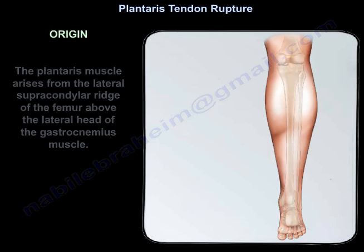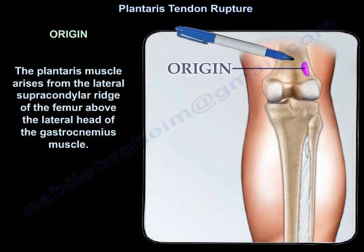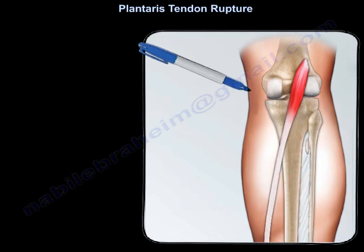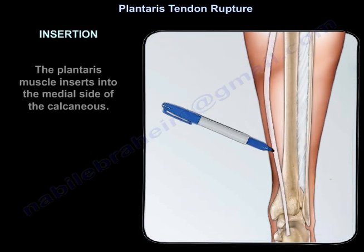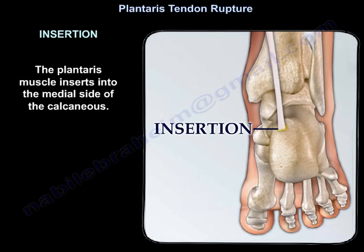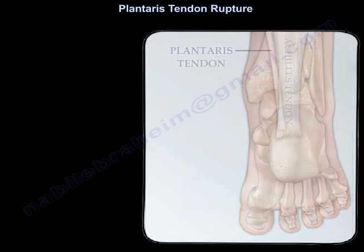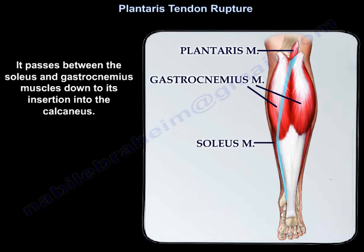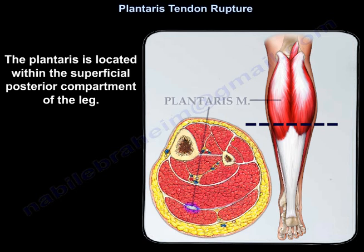The plantaris muscle arises from the lateral supracondylar ridge of the femur, above the lateral head of the gastrocnemius muscle. It inserts into the medial side of the calcaneus, passing between the soleus and gastrocnemius muscles down to its insertion. The plantaris is located within the superficial posterior compartment of the leg.